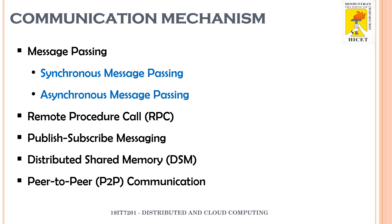The fifth mechanism is peer-to-peer communication, where each node communicates with other nodes directly. Nodes in the network may act as both sender and receiver. Whenever a node wants to send a message, it acts as a client; the receiving node acts as a server. These five mechanisms are generally followed in distributed systems.